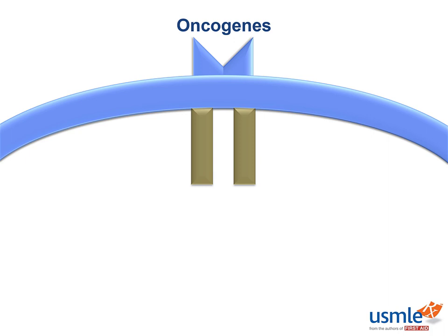We're going to talk about oncogenes and proto-oncogenes particularly. Proto-oncogenes are normal genes in our body and have certain functions to support cell growth and proliferation. However, one simple mutation in one allele can convert these genes into oncogenes. So remember — oncogenes, one mutation.